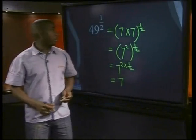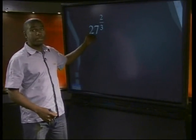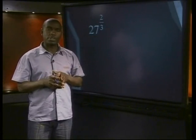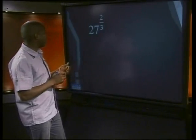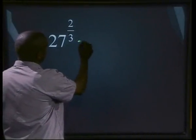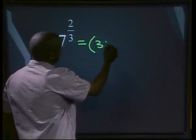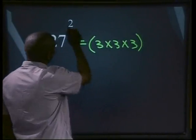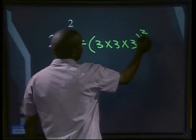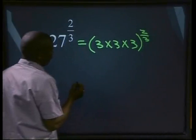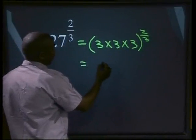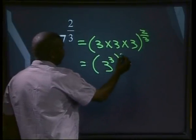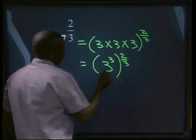What about 27 to the power 2 over 3? We must prime factorize the base. Can you write 27 as a product of its prime factors? 27 can be written as 3 times 3 times 3, all to the power 2 over 3. This will be the same as 3 to the power 3, all to the power 2 over 3.